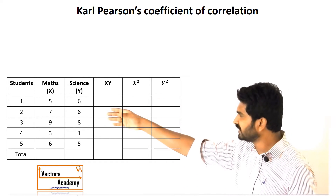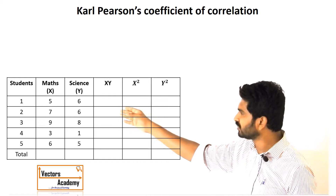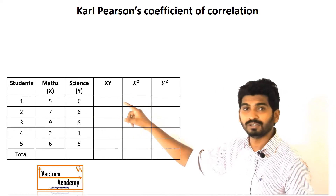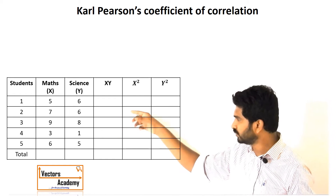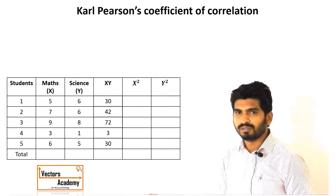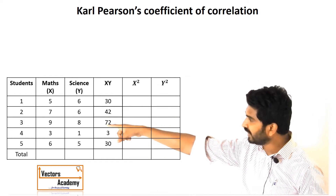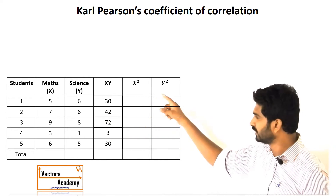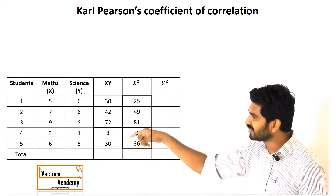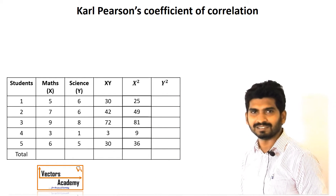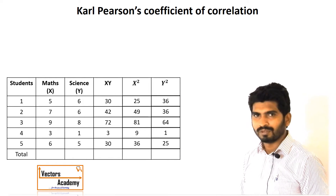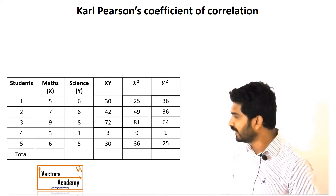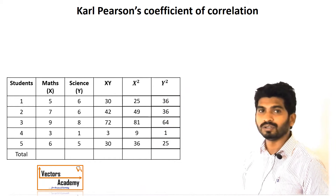These are the marks of maths and science. In the next column we multiply the marks, that is x times y, which gives all these values. Then we take the square of x — the square of the maths marks — to fill the next column. The following column represents the square of the science marks, that is y squared.